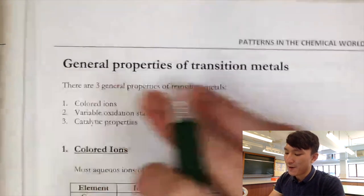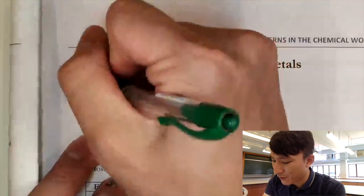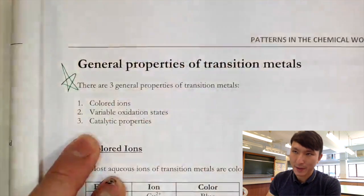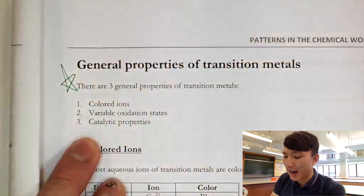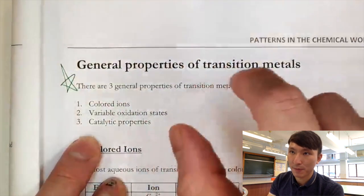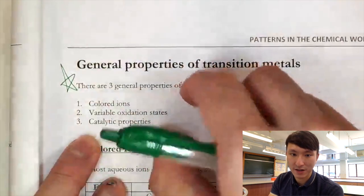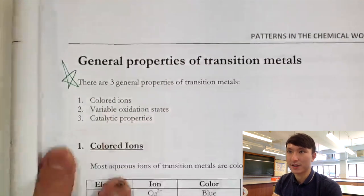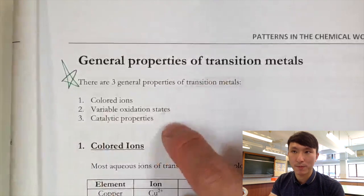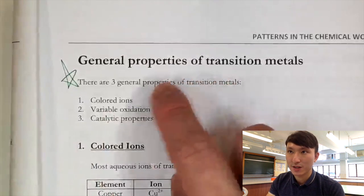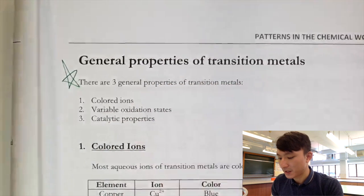There are three very important properties for this topic — these are the main focus of 'Patterns in the Chemical World.' The three general properties of transition metals are: colored ions, variable oxidation states, and catalytic properties.